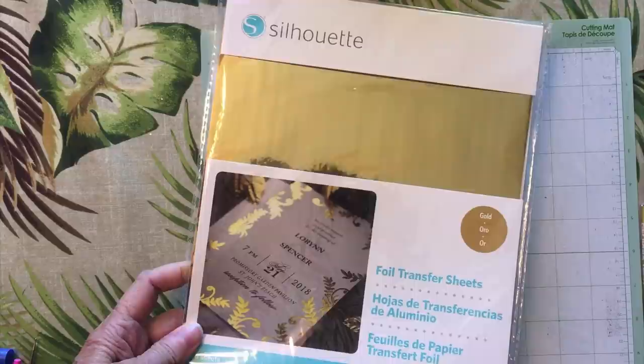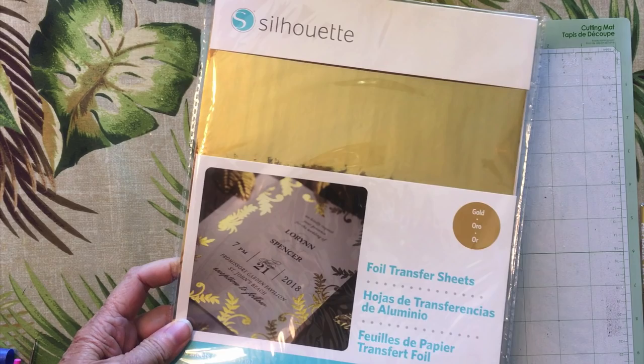The foil comes in packs of six 8.5 by 11 inch sheets in gold, silver, or copper. I'll put a purchase link in the description of this video so you can be sure to get the right stuff.